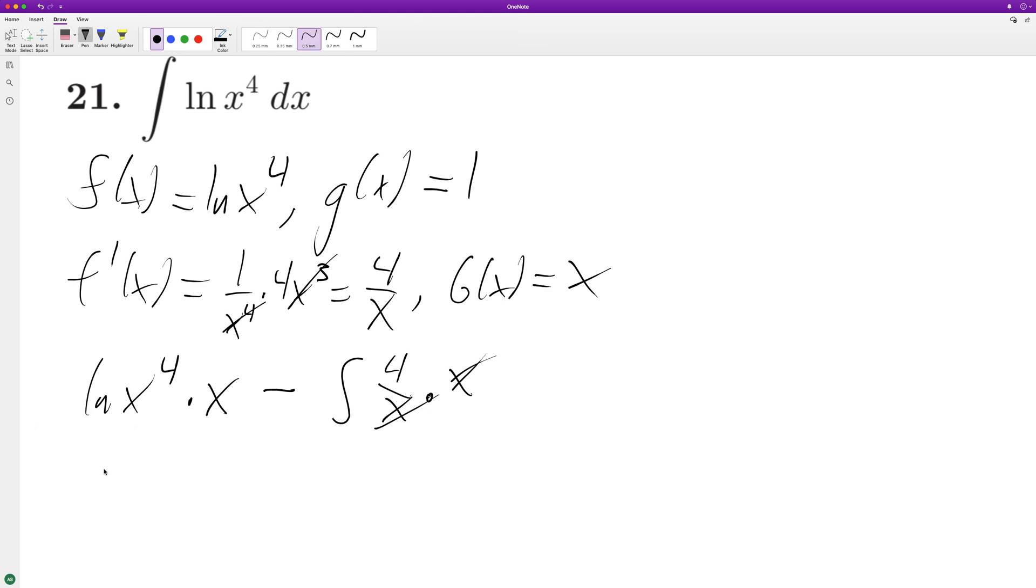So what we get here is x ln(x^4) minus the integral of 4. Four is just going to be 4x plus C.